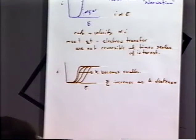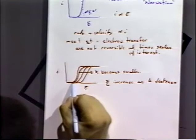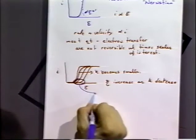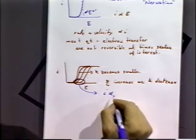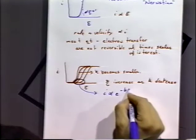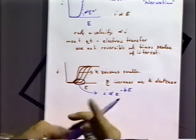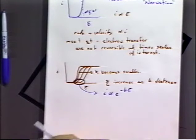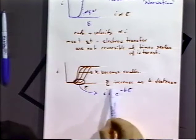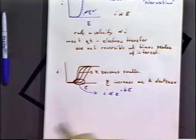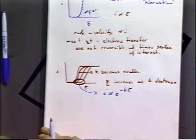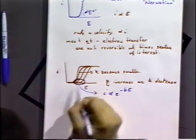Looking at the initial part of the wave, the current is experimentally noted to be proportional to an exponential function. We can parameterize that exponential function by saying the current is proportional to exp(−b·E), where b is some adjustable parameter and E is the electrode potential. We get this exponential aspect of the current flow at the foot of the wave. As we go towards the mass transport limit where it plateaus off, that exponential function no longer applies.